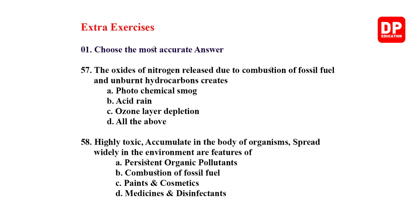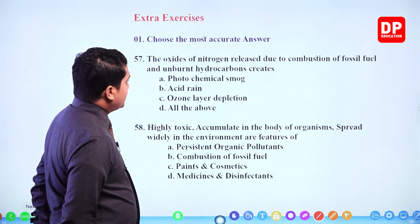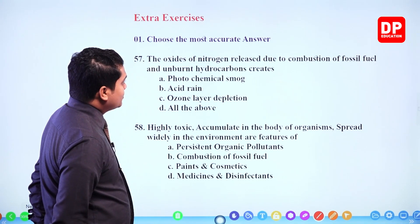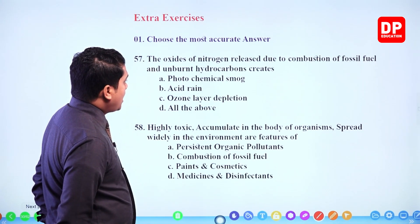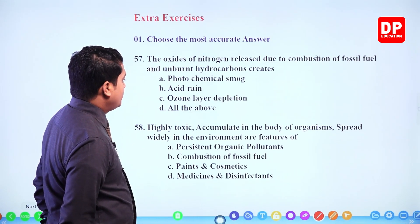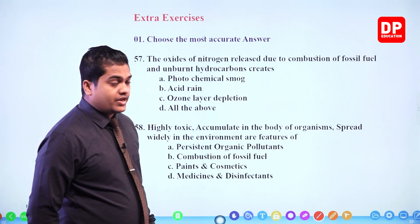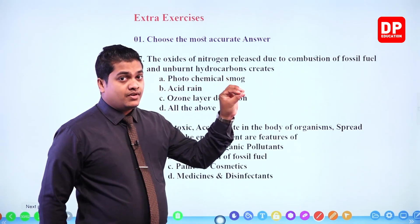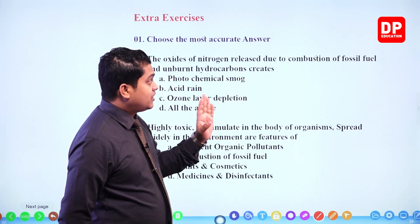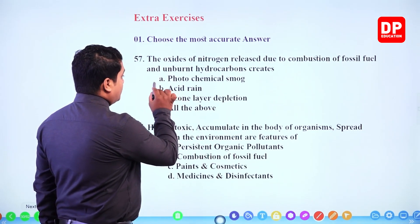Question 57: the oxides of nitrogen released due to combustion of fossil fuel and unburned hydrocarbons create — photochemical smog, acid rain, ozone layer depletion, or all of the above. Oxides of nitrogen and unburned hydrocarbons released by combustion of fossil fuel create photochemical smog.